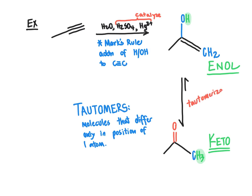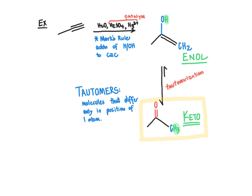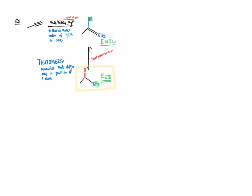We describe this process of going from the enol to the keto form, or vice versa, as tautomerization. The major product observed in the reaction flask is generally the keto form because the keto form is generally the more stable of the two. That's why the equilibrium generally favors the keto form. So if you were to look at the final product resulting from mixing the alkyne with acid catalyst and water, the final product you would observe would be the keto form, not the enol. Let's now look at the mechanism for converting the enol into the keto form.